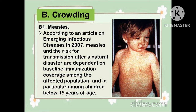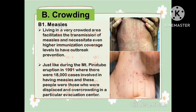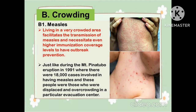Another disease in crowded conditions is measles. According to an article in Emerging Infectious Diseases in 2007, risks for measles transmission after a natural disaster are dependent on baseline immunization coverage among the affected population, particularly among children below 15 years of age. Living in very crowded areas facilitates the transmission of measles and requires even higher immunization coverage levels to prevent outbreaks. For example, during the Mount Pinatubo eruption in 1991, there were 18,000 cases of measles among people who were displaced and overcrowded in evacuation centers.